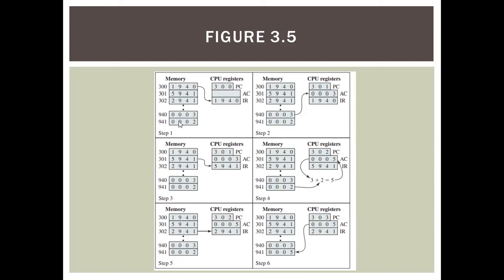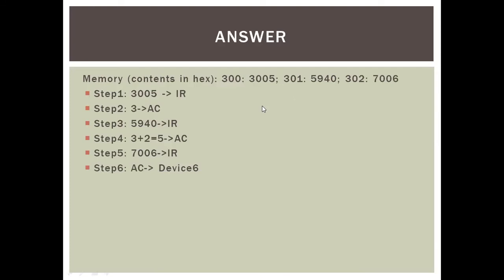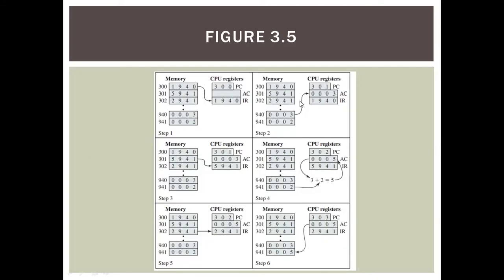After that, after we get that address 940 contains 0003, we go to step 2. In step 2, the value 0003 from address 940 is loaded into AC. Before this step we didn't know the AC value, but after this step we get AC equals 0003. So we get the first AC value of 0003.